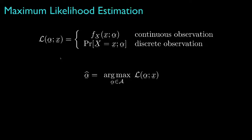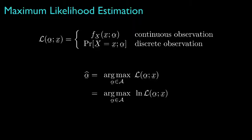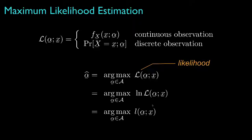The maximum likelihood estimate for the parameter vector is the value that maximizes the likelihood for the particular observation, subject to any constraints that might apply to the parameter vector. Because the likelihood can only take non-negative values, the parameter vector that maximizes the likelihood will also maximize the log of the likelihood. And because the log of the likelihood is often an easier function to optimize, we explicitly define the log of the likelihood with its own symbol, which here we show with the lowercase l. Regardless of whether we choose to maximize the likelihood or the log likelihood, we'll get the same estimate for the parameter, and this is called the maximum likelihood estimate.